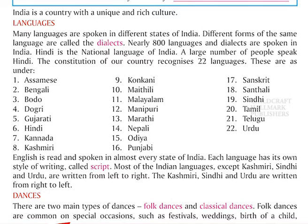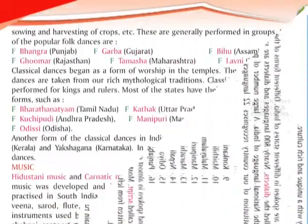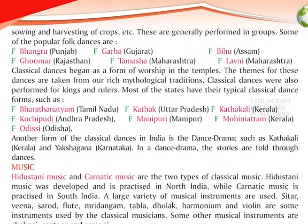DANCES. There are two main types of dances: folk dances and classical dances. Folk dances are common on special occasions such as festivals, weddings, birth of a child, and sowing and harvesting of crops. These are generally performed in groups.